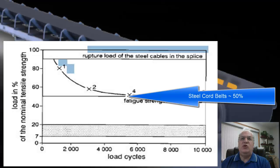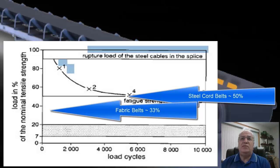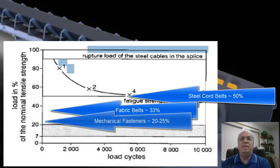In this case, the asymptote of the line, which is where most steel cord belts fall, is approximately 50% of the breaking strength of the belt. Some steel cord belts can be higher than that. Fabric belts typically are down around 33% of the breaking strength of the fabric belt, and if you have mechanical fasteners, they may fall down as low as 20-25% of the breaking strength of the belt. Again, this is a fatigue strength limit for the splice.